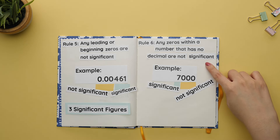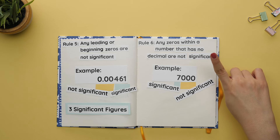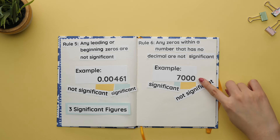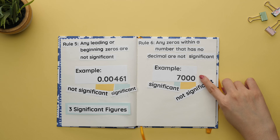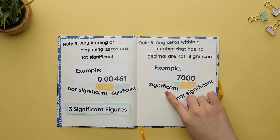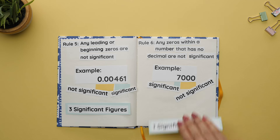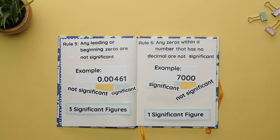Rule six: any zeros within a number that has no decimal are not significant. For example, if we had 7,000, only the seven would count as a sig fig and the zeros would not count. There is only one significant figure.